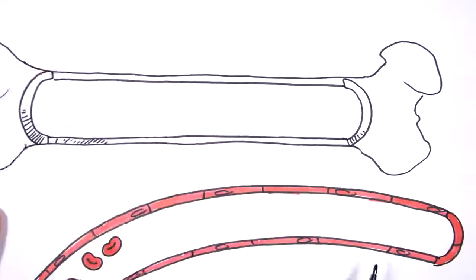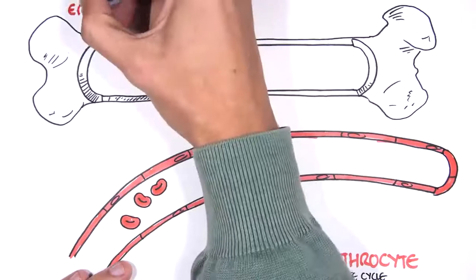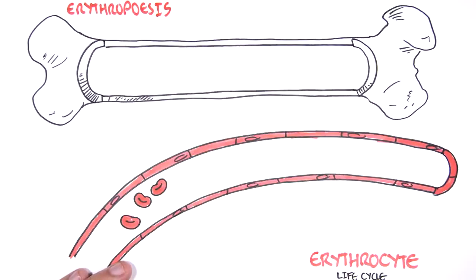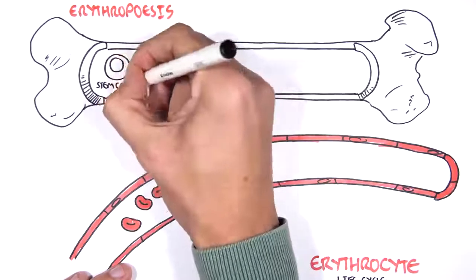So here I'm drawing a bone. The red blood cells come from stem cells within the bone marrow. Erythropoiesis is the term used to describe erythrocyte synthesis or the production of red blood cells.